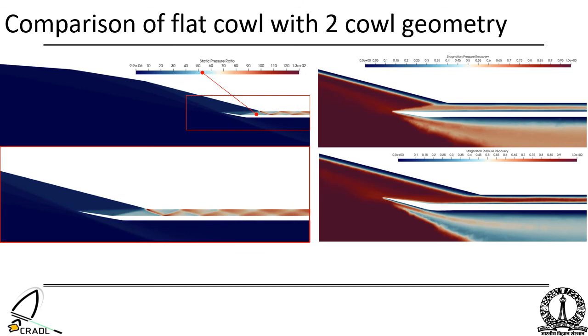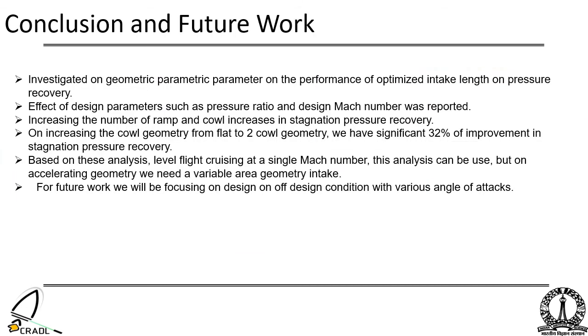Finally, the key outcomes of the current study are as follows: studying the effect of geometrical and flow parameters on the pressure recovery and the overall intake length. Two-cowl geometry performed better as compared to single cowl intake.